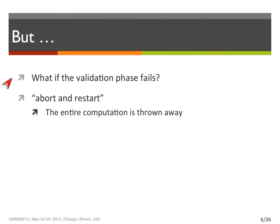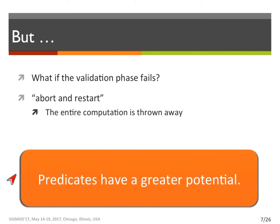Now, if a transaction fails validation, what should we do? The mainstream approach is to abort and restart the transaction, which means the entire computation is thrown away. Well, that's really unfortunate. Can't we really do better? Let's think more about predicates — they seem to have greater potential other than only being used for validation.